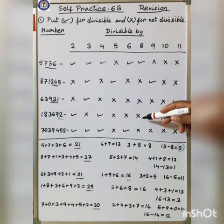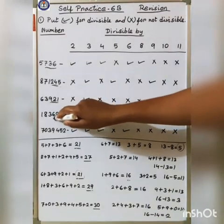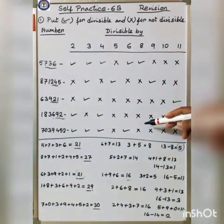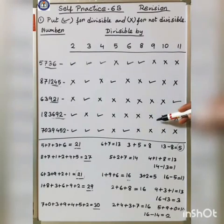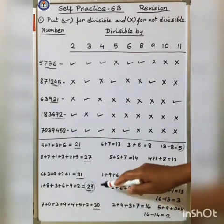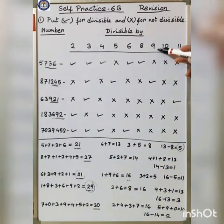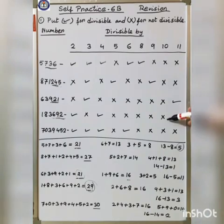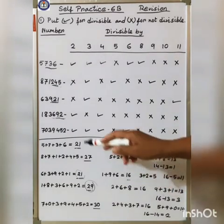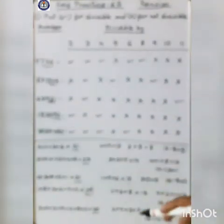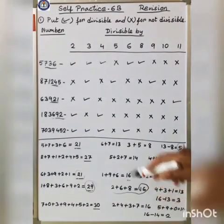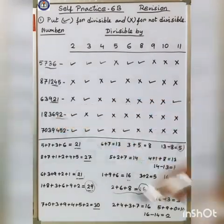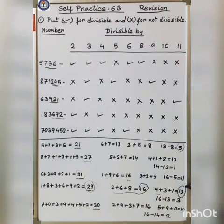For 8: the last 3 digits 692 is not divisible by 8, so cross. For 9: the total is 29, and 29 is not divisible by 9, so cross. For 10: the last digit is 2, not 0, so cross. For 11: odd places are 2, 6, and 8 — total is 16. Even places are 9, 3, and 1 — total is 13. 16 minus 13 equals 3. Since 3 is not 0 or divisible by 11, cross.